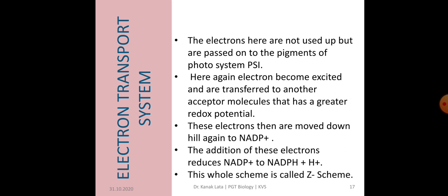These electrons are then transferred to another acceptor molecule that has a greater redox potential. These electrons are then moved downhill again to energy-rich molecule NADP+. The addition of electron reduces NADP+ to NADPH + H+.